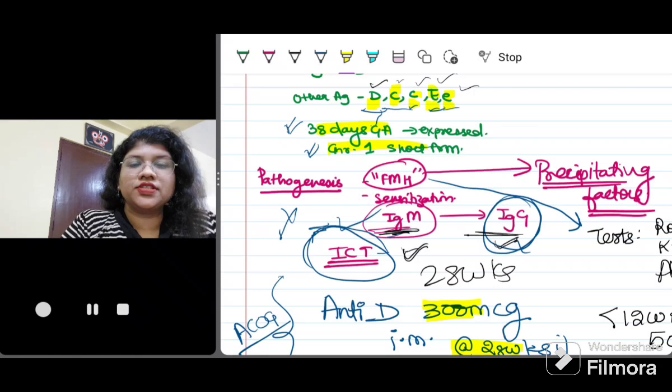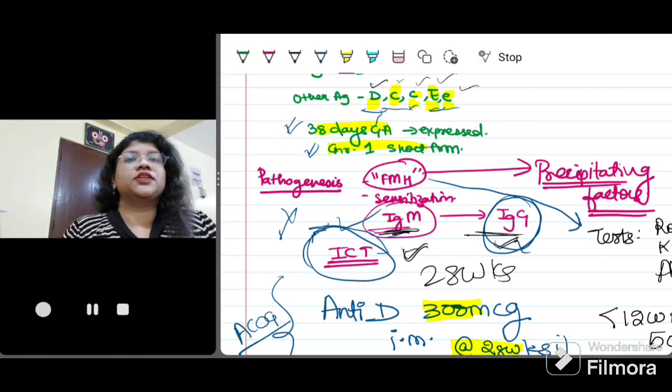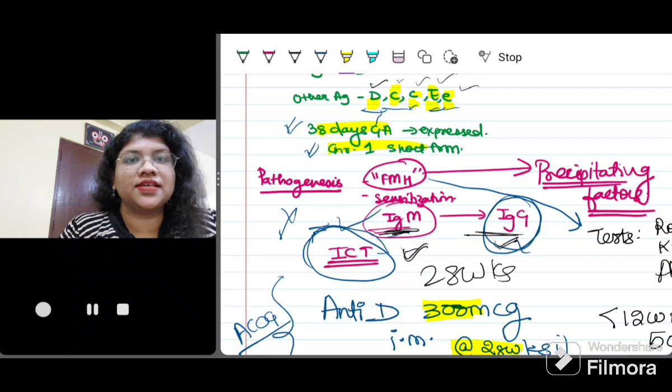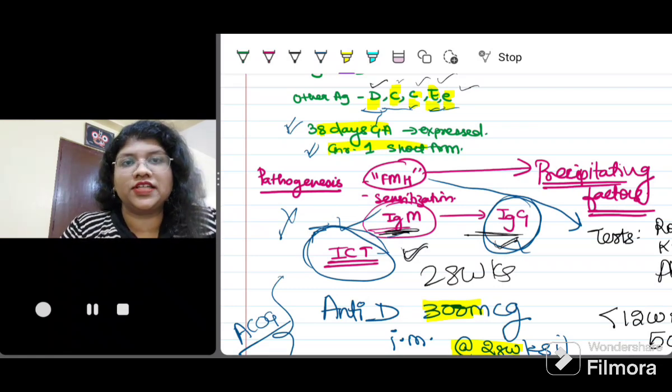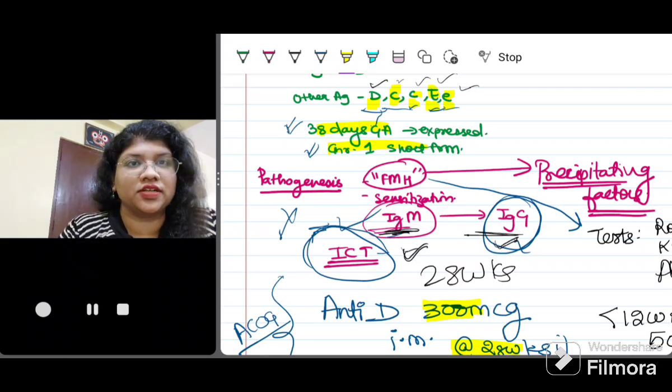So what happens during that time? There are certain conditions which precipitate fetomaternal hemorrhage. What does fetomaternal hemorrhage mean? Basically the fetal blood enters the maternal circulation.